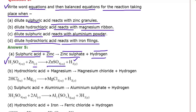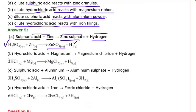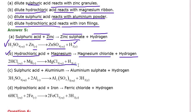For answer 5b: hydrochloric acid plus magnesium gives magnesium chloride and hydrogen. The chemical equation is HCl (aqueous) + Mg (solid) → MgCl2 (aqueous) + H2 (gas).